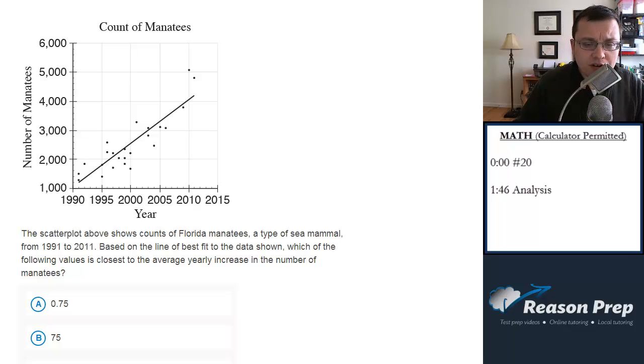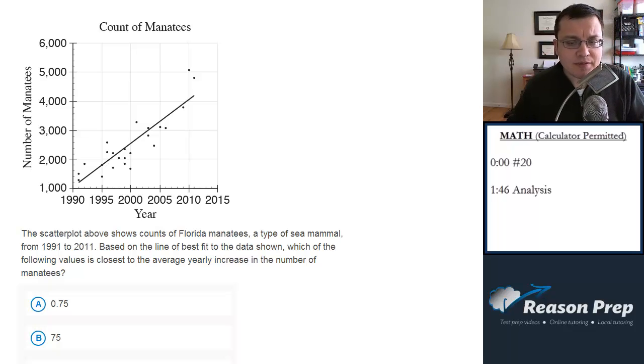The scatter plot above shows counts of Florida manatees, a type of sea mammal, from 1991 to 2011. Based on the line of best fit to the data shown, which of the following values is closest to the average yearly increase in the number of manatees?